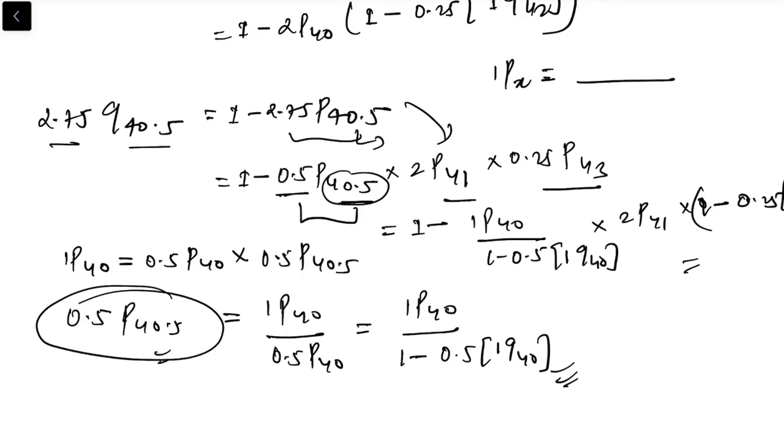In the next video we'll talk about CFM, that is constant force of mortality. CFM is also one of those approximate methods used to calculate this kind of probabilities, but with a slightly different approach. So now let's stop here and I'll see you in the next video. Thank you so much for watching.